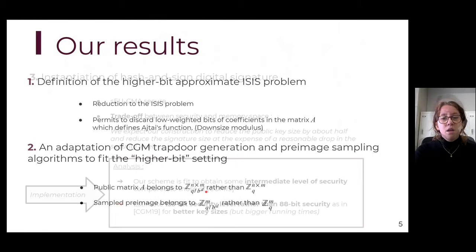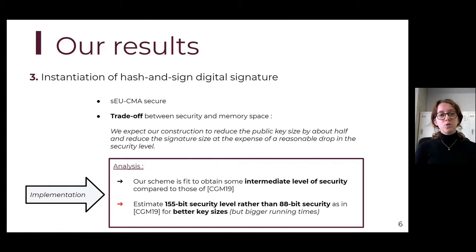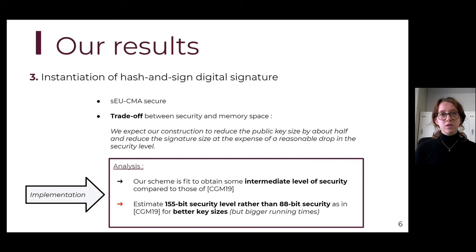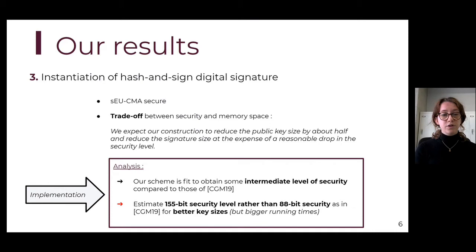To assess the impact of the higher-bit approximate setting, we instantiate a hash-and-sign digital signature which is strongly existentially unforgeable under chosen message attack. We observe that our construction implies a trade-off between security and memory space. This trade-off is basically due to the increase in error on the sampled pre-image. To assess whether this trade-off is worth it, we use a proof-of-concept implementation and obtain some pretty good and interesting results.